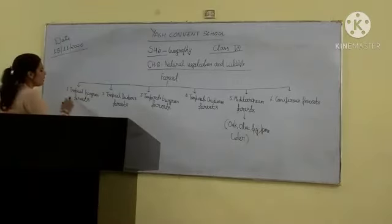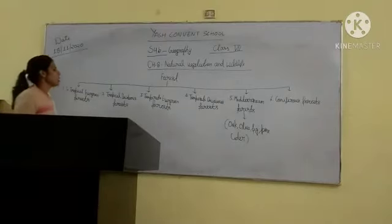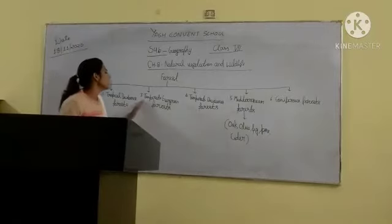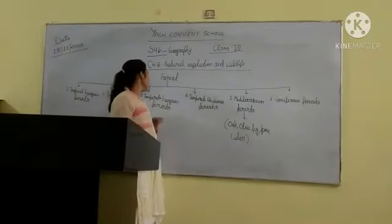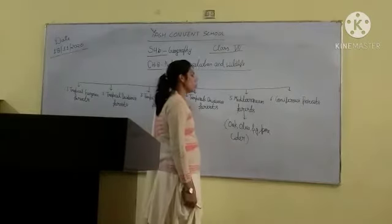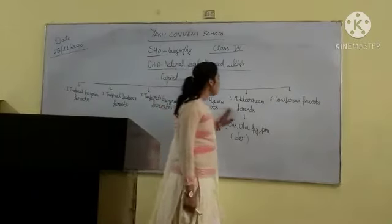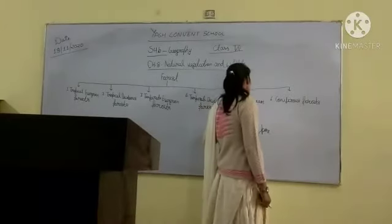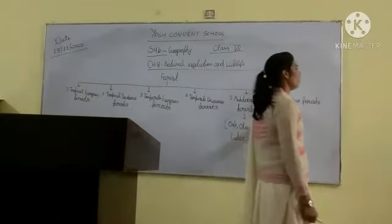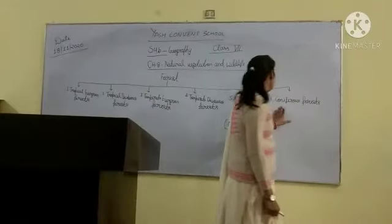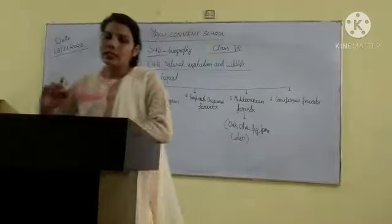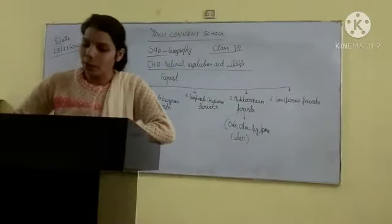First, tropical evergreen forest. Second, tropical deciduous forest. Third, temperate evergreen forest. Fourth, temperate deciduous forest. Fifth, Mediterranean forest. Sixth, coniferous forest. These six types of forest are in this chapter.